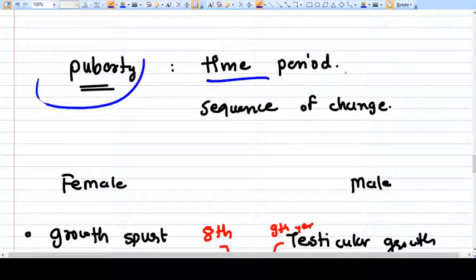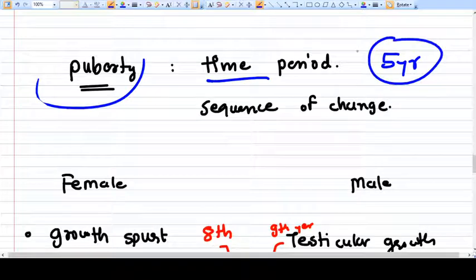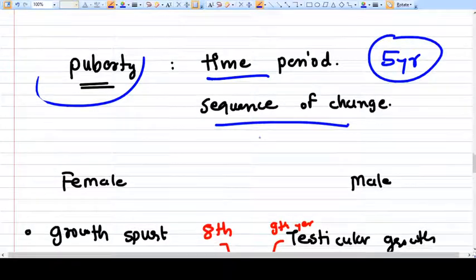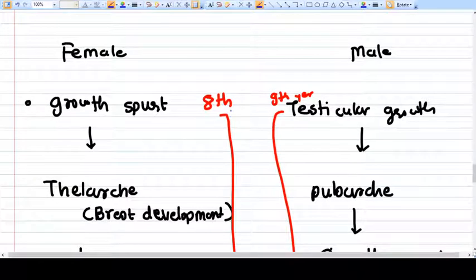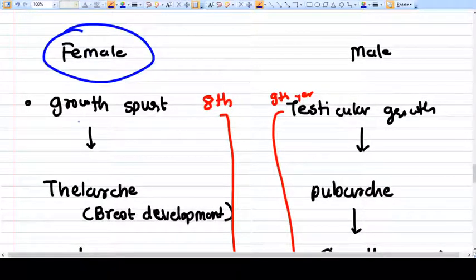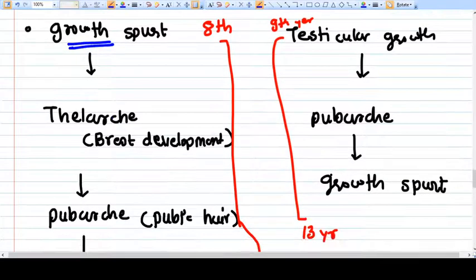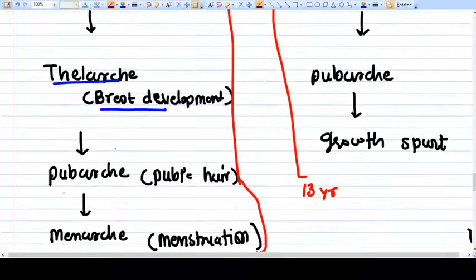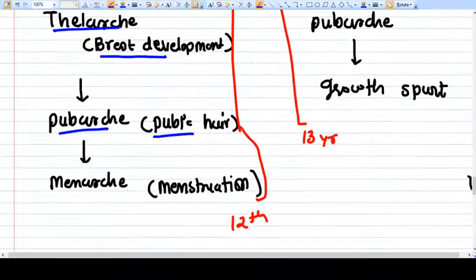Puberty is a time period of around five years, a sequence of changes. In the female, the first thing happening in puberty is growth spurt, then comes thelarche, which means breast development, then pubarchy which means pubic hair development, then menarche which is menstruation.